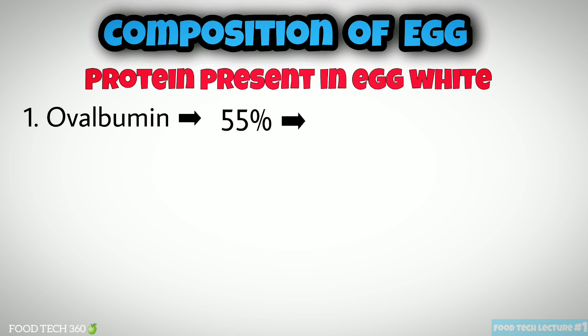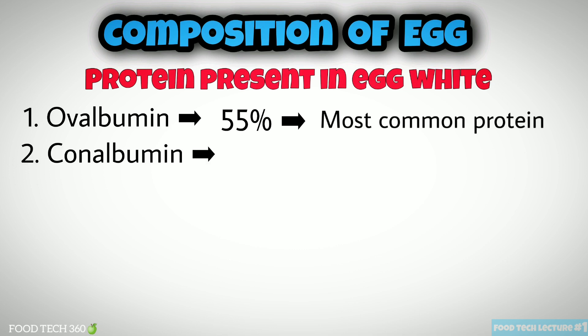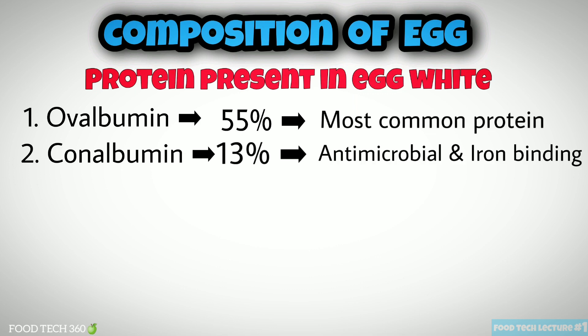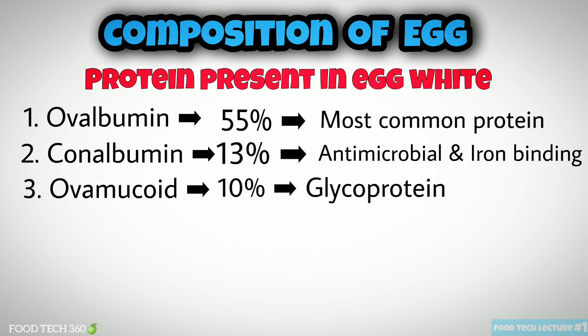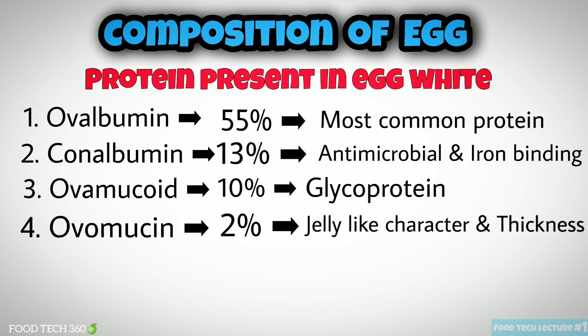Ovalbumin: 55% of egg white protein comes from ovalbumin — it is the most common protein in egg white. Conalbumin: contains 13% of total egg white protein; it is antimicrobial and has iron-binding ability. Ovomucoid: 10% of egg white protein; it is a glycoprotein.